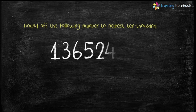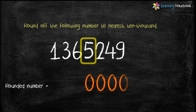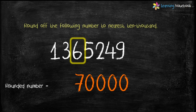Let's take one more example: round off 1365249 to the nearest 10000. Here the thousands digit is 5. So first replace 5, 2, 4, and 9 by 0, then increase the ten-thousands digit, which is 6, by 1 — 6 plus 1 equals 7. Keep the remaining digits as they are. Therefore the rounded number is 1370000.